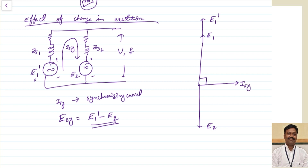The current will be lagging by 90 degrees because both impedances are inductive and the value of resistance is very less. We can treat it as a pure inductive load - in a pure inductive load the current lags behind the voltage by 90 degrees. This current is my Isy. Coming to the second generator, it is taking the current so it will act like a motor, and the current will lead the voltage E2 by 90 degrees.